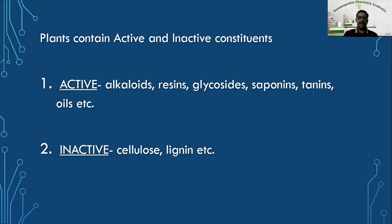I am only discussing about pharmacologically important active constituents. It also contains inactive constituents such as cellulose, lignin, etc., which form the structure of the plant rather than having any nutritional or pharmacological action. In today's video lecture, we are going to discuss more about pharmacologically active constituents of plants like alkaloids, glycosides, resins, saponins, tannins, and oils — both fixed oils and volatile oils.